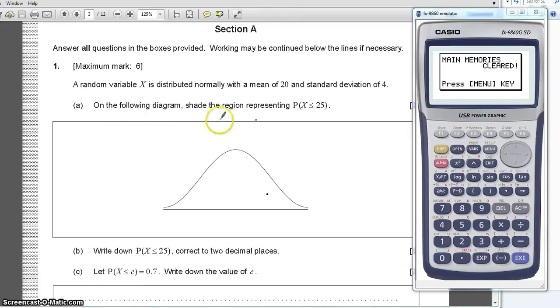On the following diagram, shade the region corresponding to the probability of X being smaller than or equal to 25. The mean is 20 and remember that the normal distribution is symmetrical about the mean, so here would be 20. And this is going to be smaller than or equal to 25, so 25 should be around here. And we have to shade the region being smaller than this, so smaller than this would be this way.